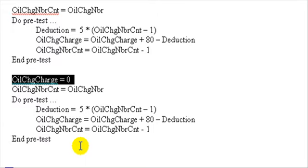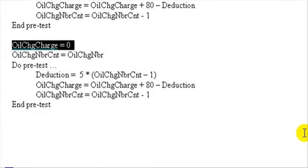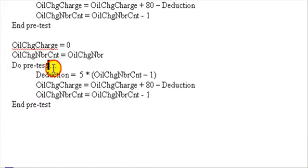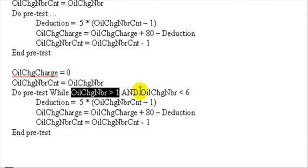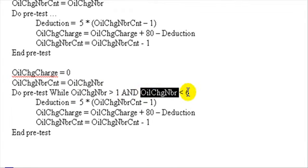We might think we have the correct algorithm now. One thing I haven't done yet is put in the conditional test for the pretest loop — I usually leave that until last because it's easier to see what the test should be when I can see the whole algorithm. The loop should only run when the number of oil changes is between 1 and 6. I've used the while keyword: 'while oil change number greater than 1 and oil change number less than 6.'